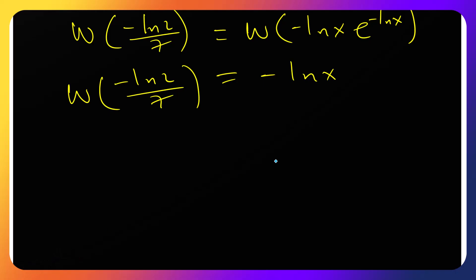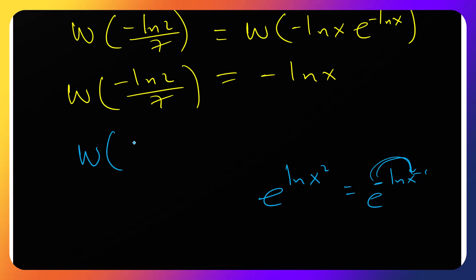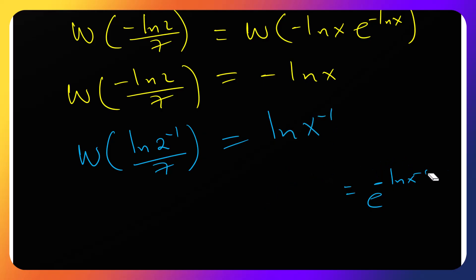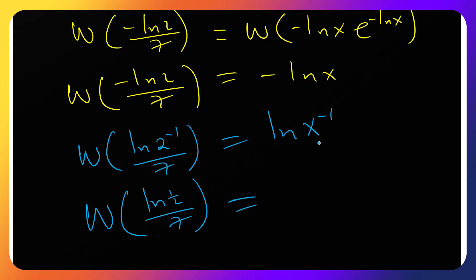We can manipulate the negative. Recall that e^(x^(−1)) can be rearranged so the negative turns the argument into a power of −1. This gives W(ln(2)^(−1)/7) = ln(x)^(−1), or equivalently W(ln(1/2)/7) = 1/ln(x)... wait, it gives ln(x) to the power negative one, which means W(ln(1/2)/7) = 1/ln(x).